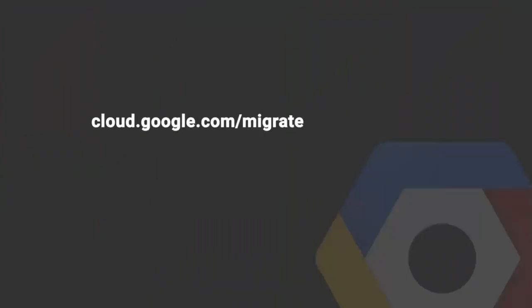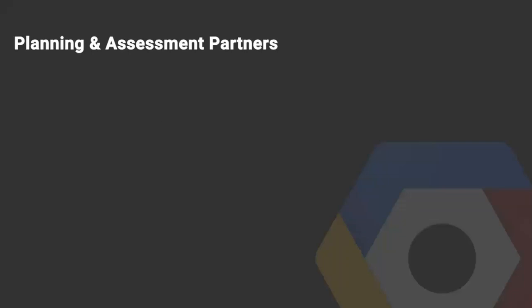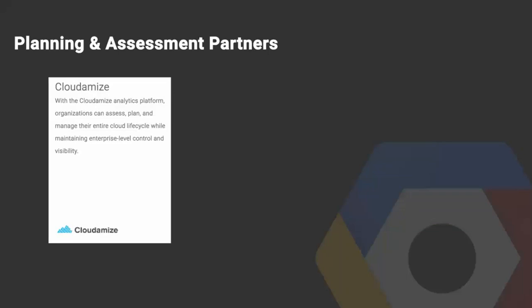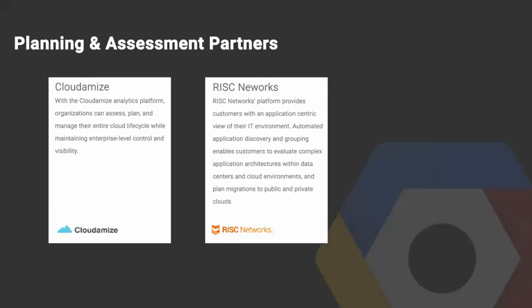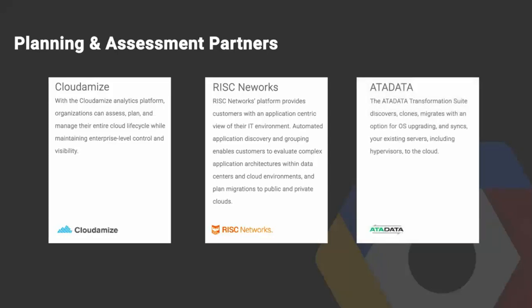To help everyone understand how to move to the cloud, we're happy to announce cloud.google.com/migrate as a landing home for customers to learn about our different solutions. We've identified three planning and assessment partners: Cloudimize, an agent-based discovery migration tool commonly used for TCO-sensitive customers; Risk Networks, an agent-less discovery and migration planning tool focused on network discovery, mapping, and visualization, commonly used in complex legacy environments; and Atadata, which integrates agent-less discovery and virtual machine migration tools with add-on professional services support.